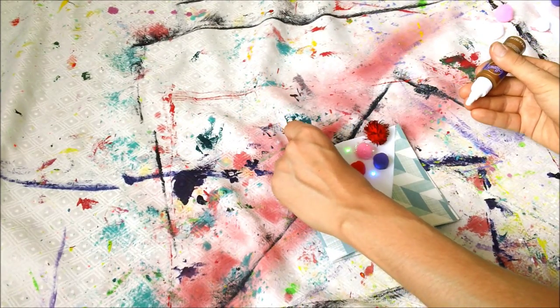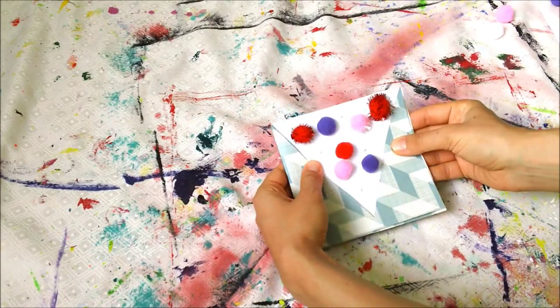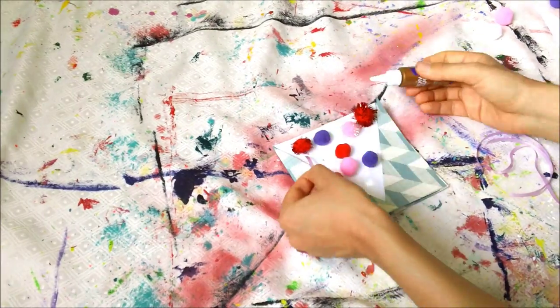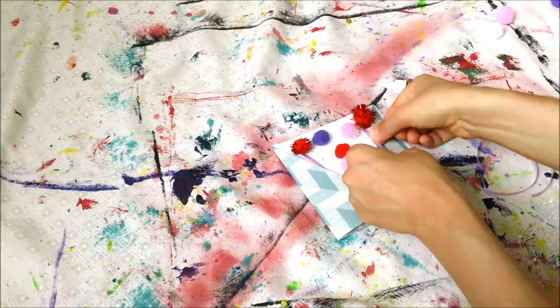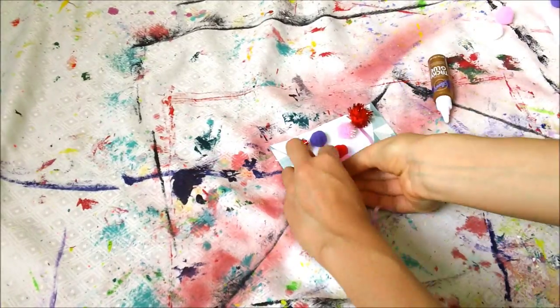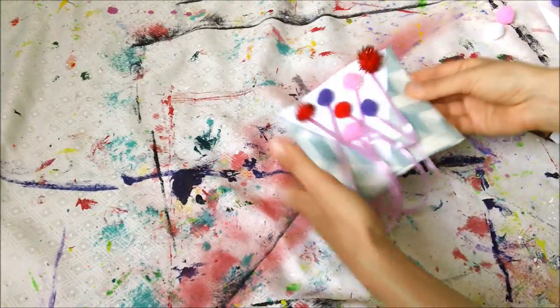Now I'm gluing pom poms in the white space triangle to resemble birthday balloons. Then I'm attaching curling ribbon to each balloon and curling the pieces with scissors.